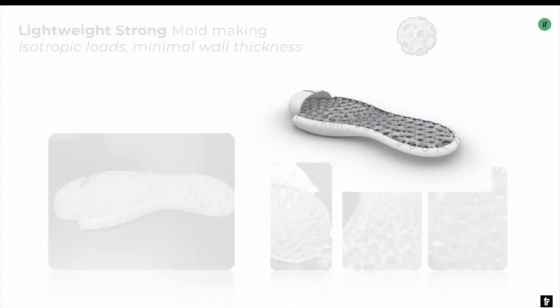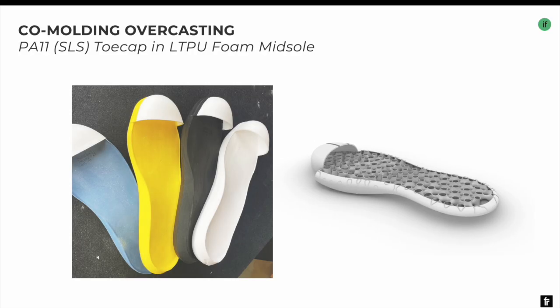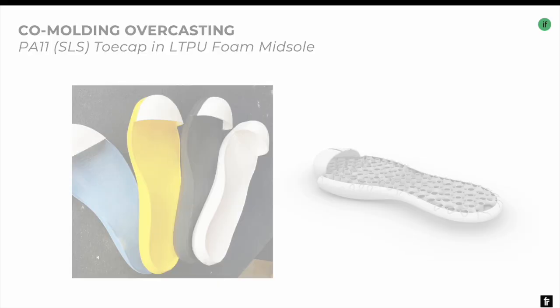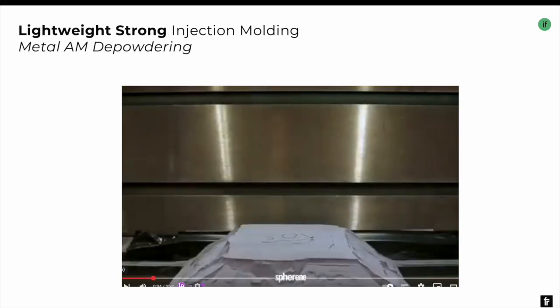At that point I didn't succeed that much because the structure was more than 1.5 gigabytes — not easy to handle. But it was good to prove that we can do overcasting using 3D printed parts with foam casting in a functional part. This is for safety shoes — we integrated the toe cap into every foam midsole.